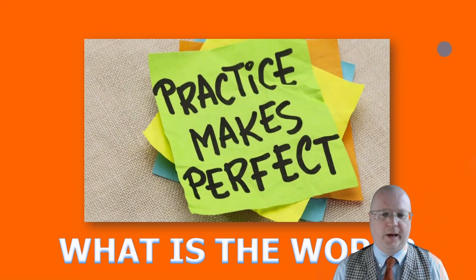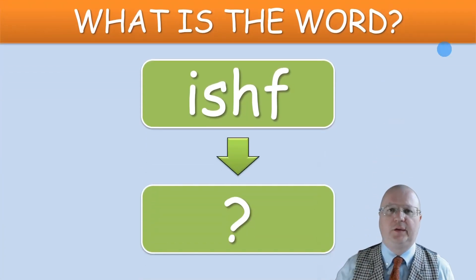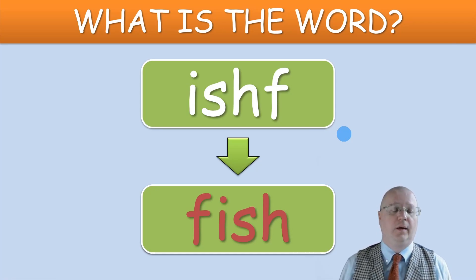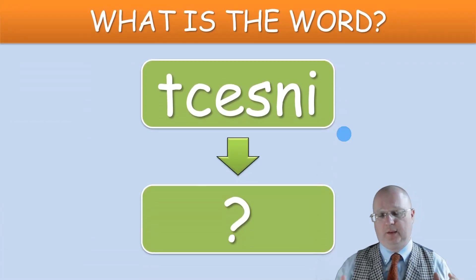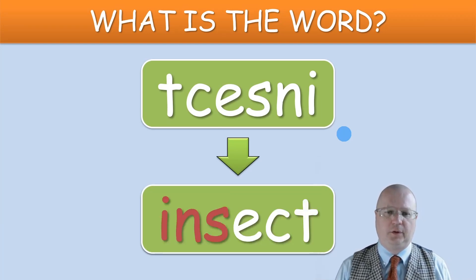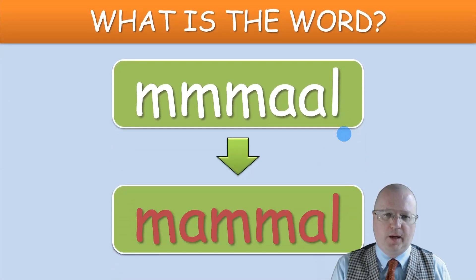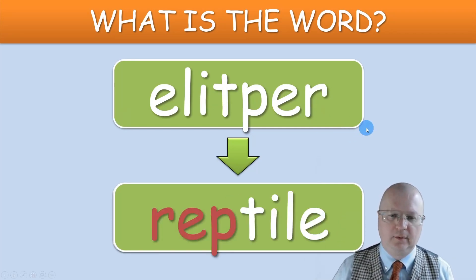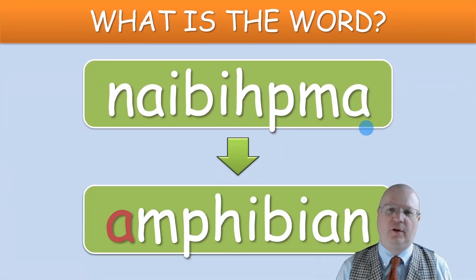Now we have post-reading activities. The first one is 'What is the word?' — students need to unscramble a word. All the vocabulary words are taken from the reading. You show an example to save time explaining to students. You can do it in pairs or as a choral drill. So quickly: bird, mammal — what is the word? Reading backwards it's reptile, and most 10-year-olds can really get that. And: amphibian.